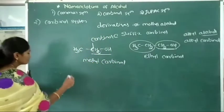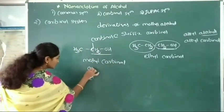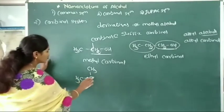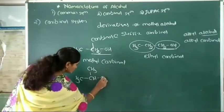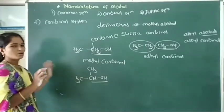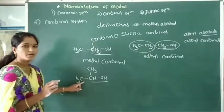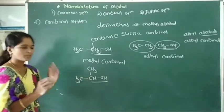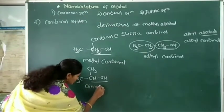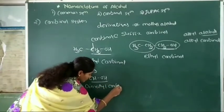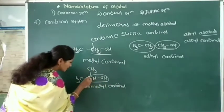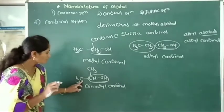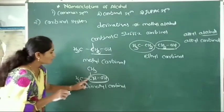Let us take another example where the carbynol carbon is attached to two carbon atoms — two similar methyl groups attached to the carbynol atom. That compound is called dimethyl carbynol. The carbynol carbon has two similar methyl groups attached to it, therefore the name of this alcohol is dimethyl carbynol.